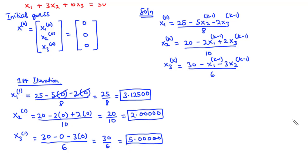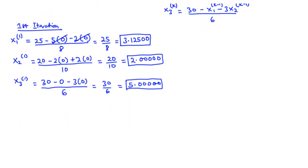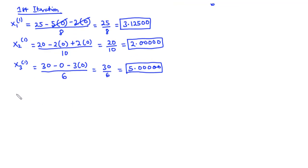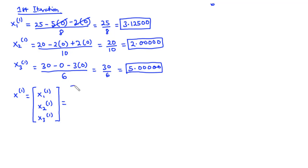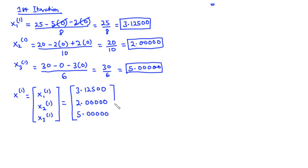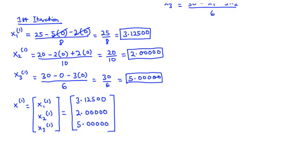These are the values obtained at the end of the first iteration step: x(1) = [x1(1), x2(1), x3(1)] = [3.12500, 2.00000, 5.00000]. Now let's move on to the second iteration step.